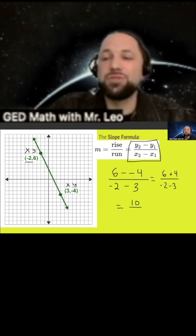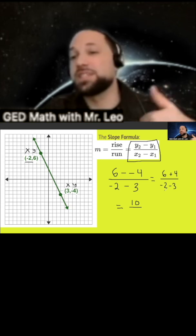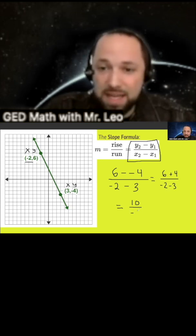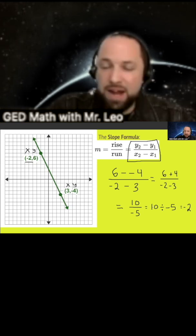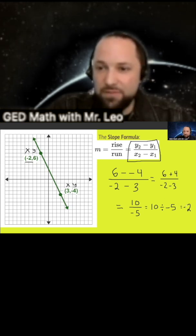Down below, I have negative 2 minus 3. The signs are the same, so we'll add the numbers and use the sign. That's negative 5. This means 10 divided by negative 5. A positive divided by negative is a negative. Final answer here is negative 2.